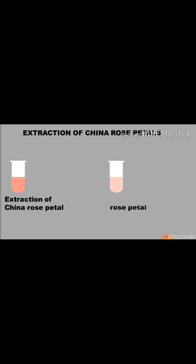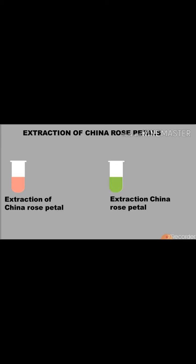Take another test tube half-filled with extraction of China rose petals. Now add few drops of base. We will notice green color will appear. It means in the presence of base, the extraction of China rose petals changes into green color. So we can say extraction of China rose petals can be used as an indicator for both acid and base.